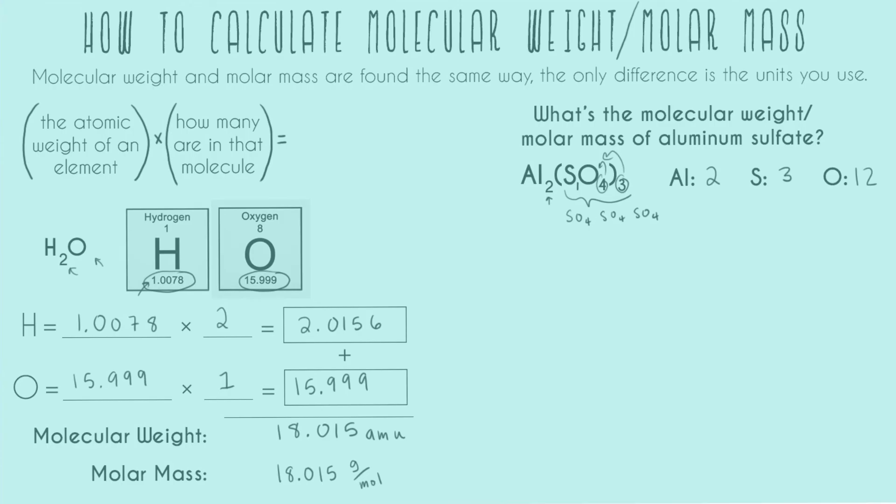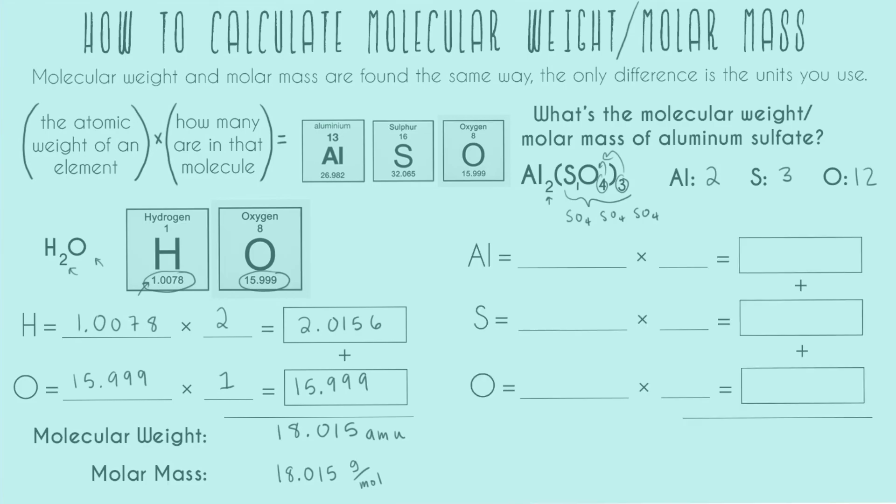So now that I have that, I'm going to need the atomic weights. Just pulling those three periodic table boxes right here. And now I'm ready to go ahead and do my math and add everything up. So aluminum, 26.982. And I have two of them. Multiplying them together, I get 53.964.